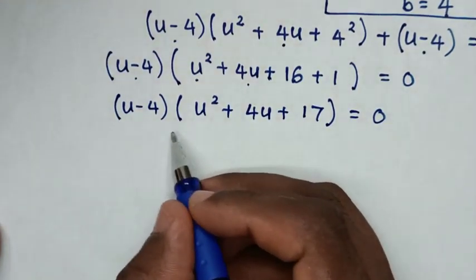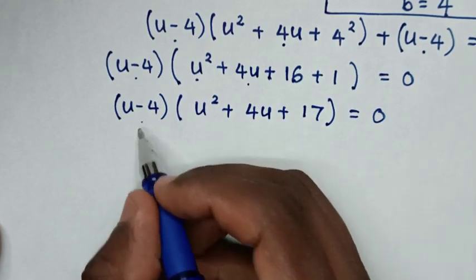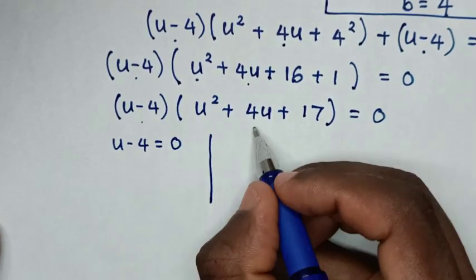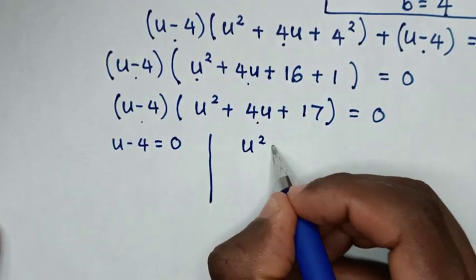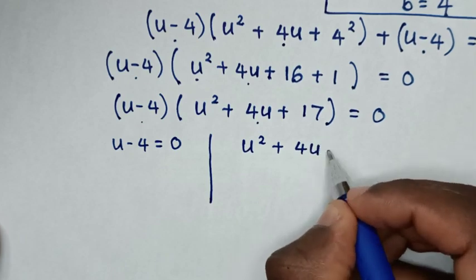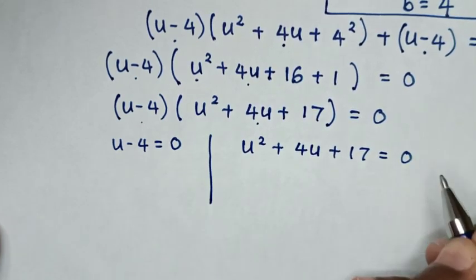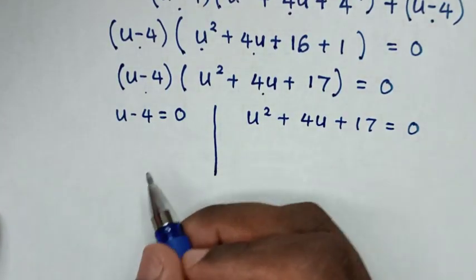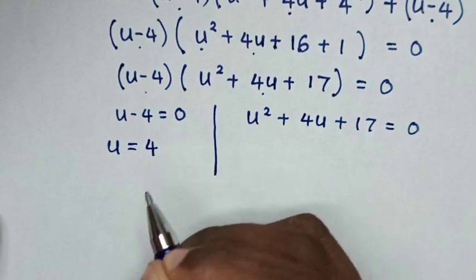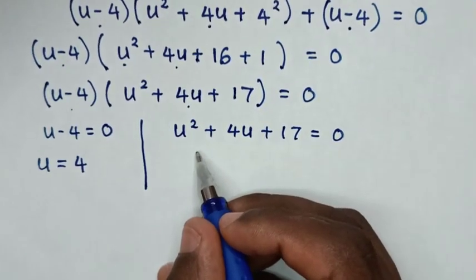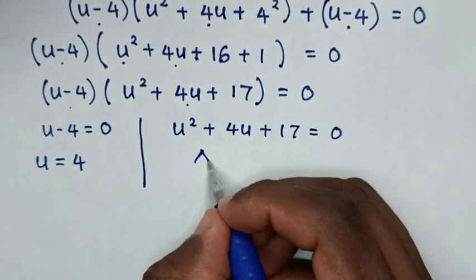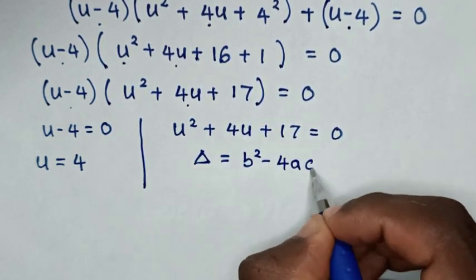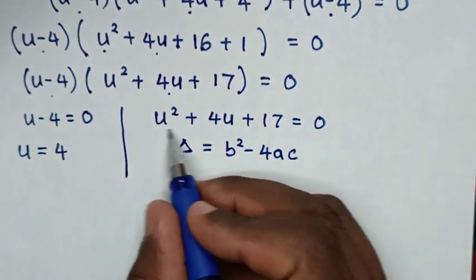From this equation we have two solutions. The first solution is u minus 4 is equal to 0, and the second solution is u squared plus 4u plus 17 is equal to 0. From the first solution, we take negative 4 to the right side, so it will be u is equal to 4. From the second solution we will use the discriminant formula, which is equal to b squared minus 4ac.